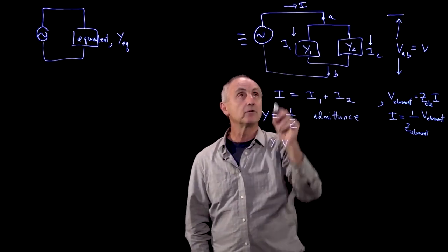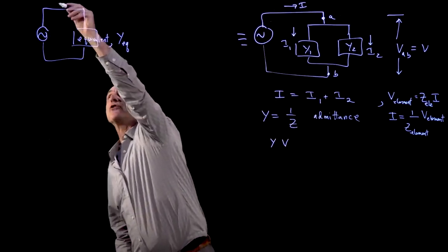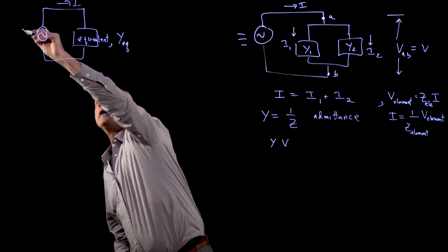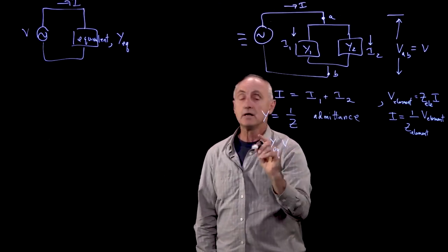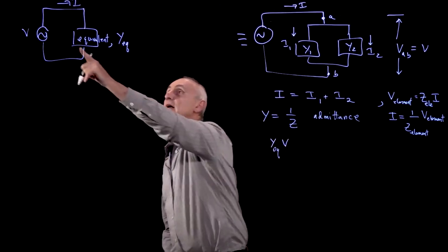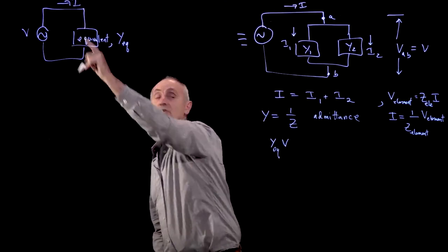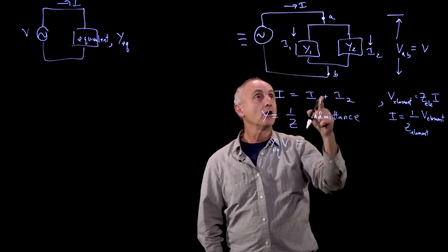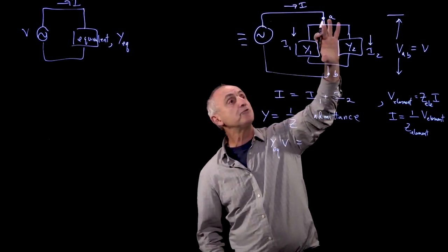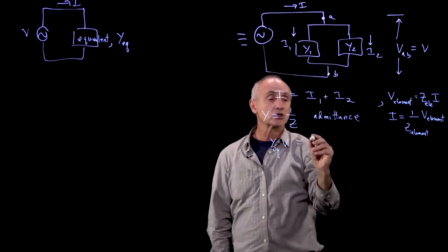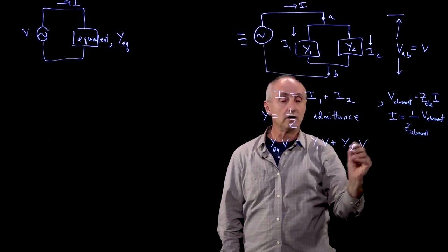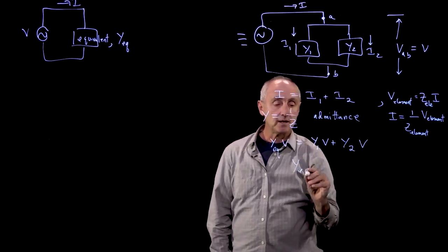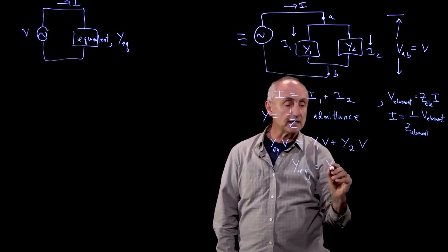When we look at this circuit with I and V, the current is equal to the equivalent admittance times the voltage. Whereas over here, it's the same voltage across each element. So it's Y1 times V plus Y2 times V. And what we see is that when elements are connected,